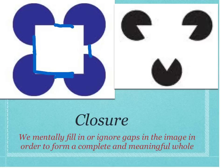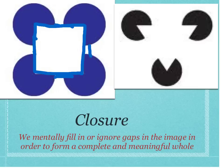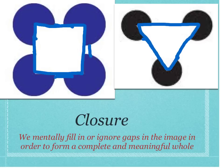You've created an outline of those gaps to basically create a meaningful whole in the form of a square. In the case of the image on the right, do you see three Pac-Man-like circles or do you perceive a white triangle on top? If the latter, then you have mentally ignored the gaps in that sensory information, or completed the image by forming in your mind a triangle.